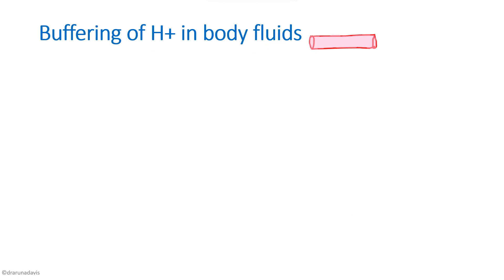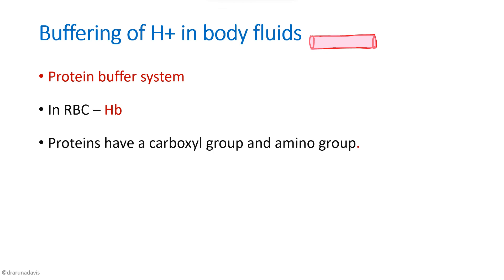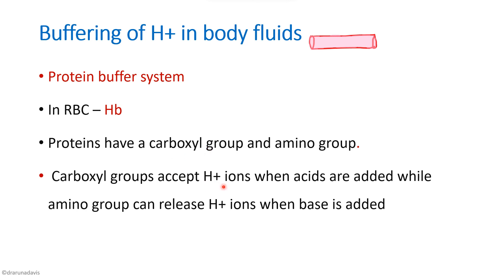There is one more buffer system called the protein buffer system. In our RBCs we have the protein hemoglobin. Proteins have a carboxyl group as well as an amino group. The carboxyl group acts as a proton acceptor — it accepts H+ ions when acids are added — while the amino group acts as a proton donor, releasing H+ when a base is added. In the equation, H+ combines with hemoglobin to form HHb. This completes the basic buffers in body fluid along with the Henderson-Hasselbalch equation.